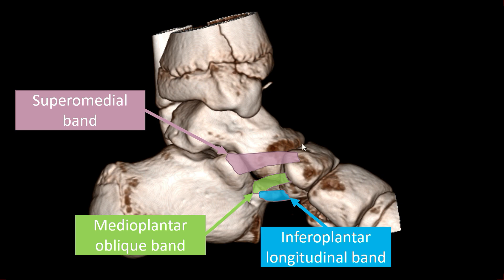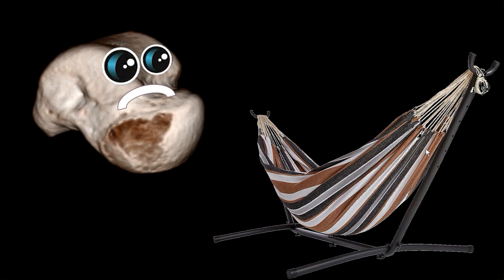The function of the spring ligament complex is like a hammock — it holds the talus in position and is basically the static stabilizer of the medial longitudinal arch of the foot. As long as these bands are intact, the talus should not dive downwards, as you would have in an acquired flatfoot deformity. If both the spring ligament and the posterior tibial tendon are damaged, you may get an acquired flatfoot deformity.